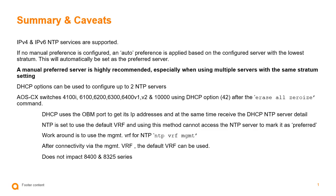We can use DHCP to configure up to two NTP servers. Note that on specific switches, if the erase all zeroize command is used and the switch reboots, it will attempt to get DHCP NTP servers. Since DHCP uses the out-of-band management port to get its IP addressing, it receives the DHCP NTP server details. At this point it is set to use a default VRF, and after the erase all zeroize command, it cannot access the NTP server to mark it as preferred. The workaround is to use a management VRF if available to connect to the NTP server, and then switch back to the default VRF after connectivity is established.